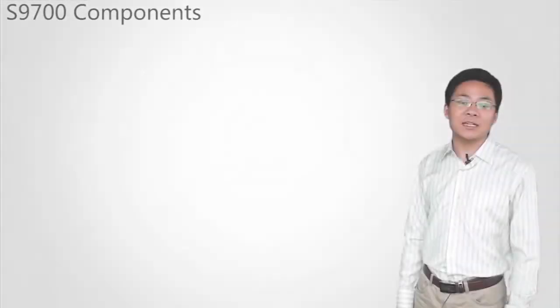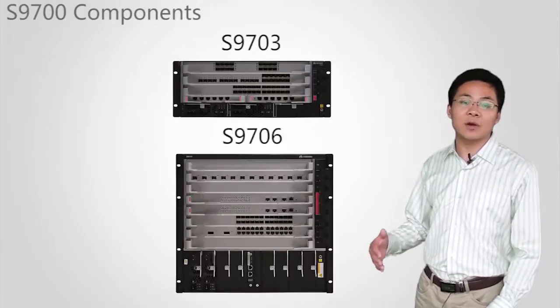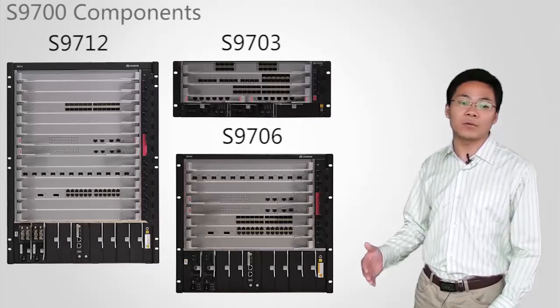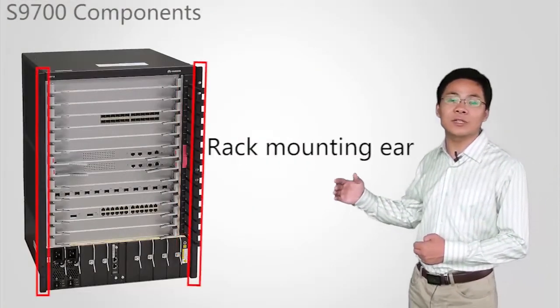S9700 components. Next, let's learn about the components of S9700. Huawei S9700 series have three models: S9703, S9706, and S9712. At the front of the switch, there is the power supply module, the board slot, cable divider, ESD jack, and the rack mounting ear.